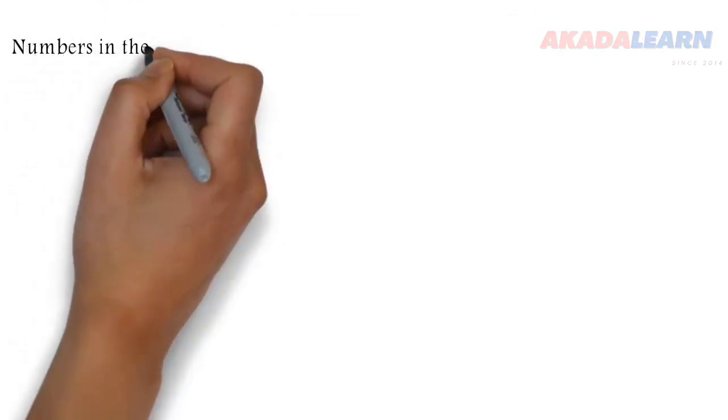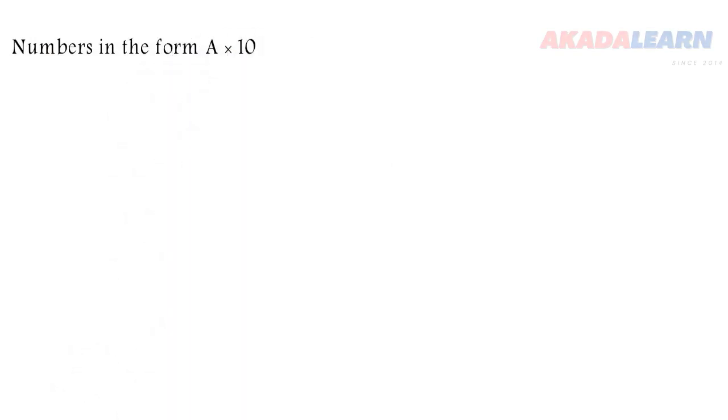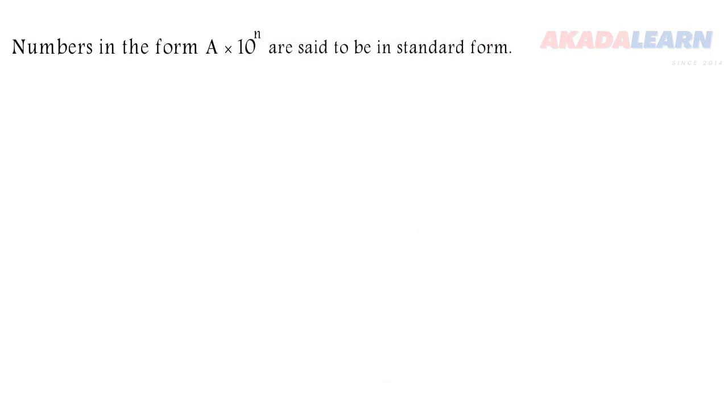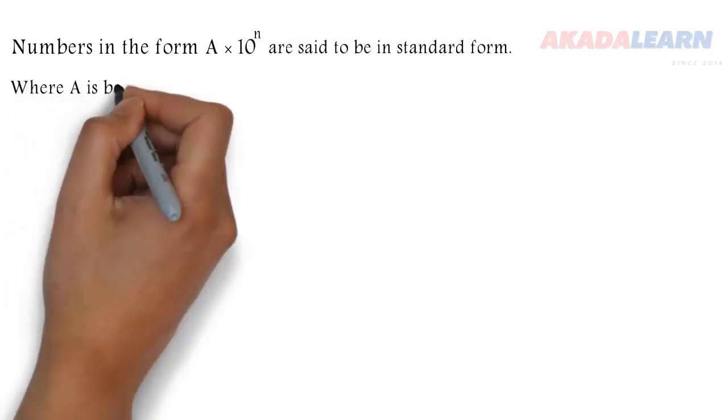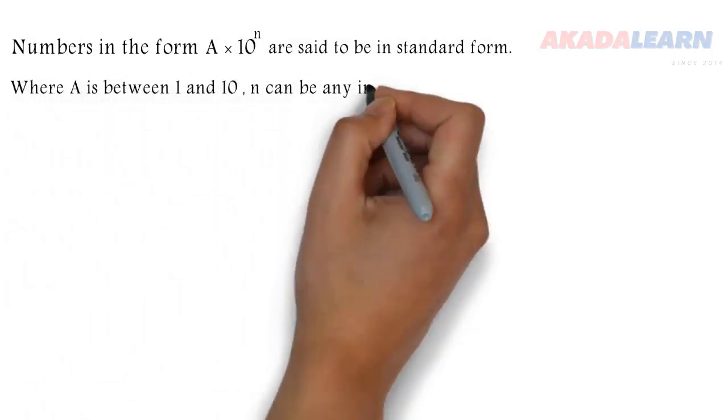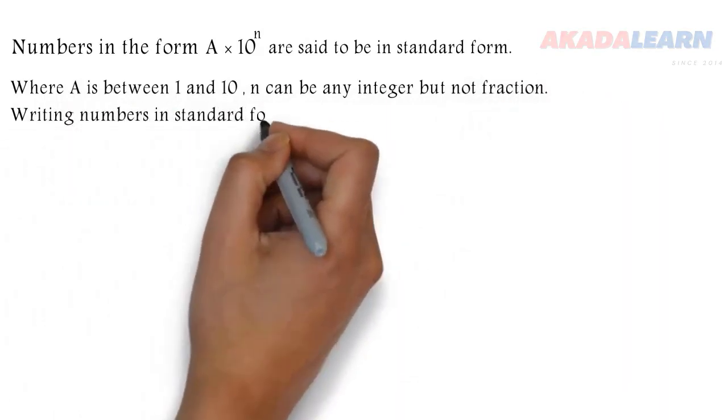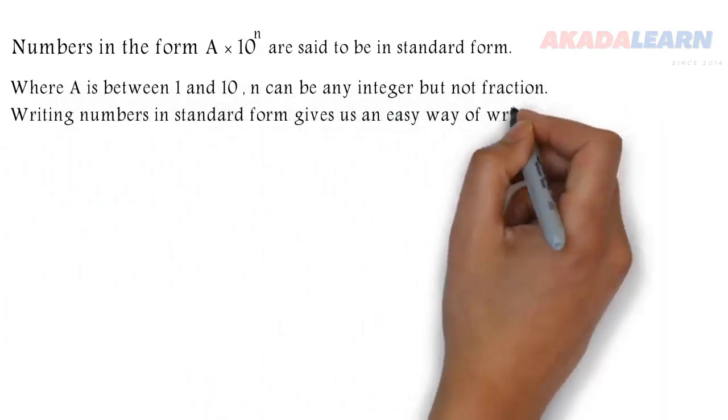When we say a number is in standard form, it means it's a number of the form A times 10 raised to the power n. The A there is a number between 1 and 10, while n can be a negative or a positive number, and n cannot be a fraction.